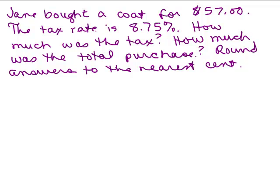So here's the first one. Jane bought a coat for $57. The tax rate is 8.75%. How much was the tax? How much was the total purchase? And since we're talking about money it makes sense that we're going to round our answers to the nearest cent. So go ahead and try this on your own first, see if you can answer those two questions.